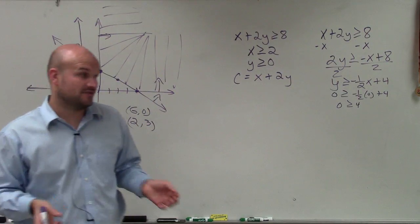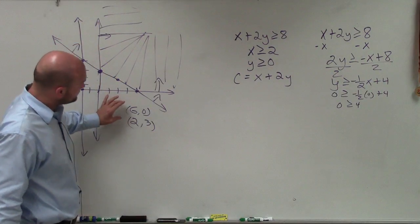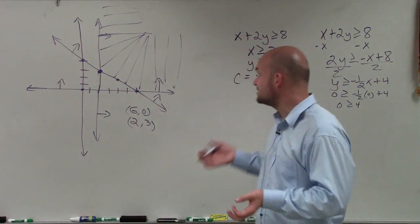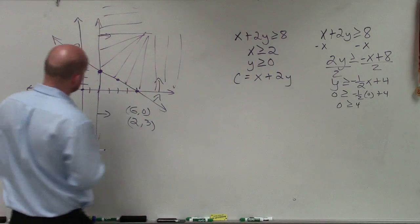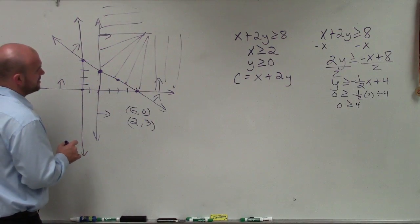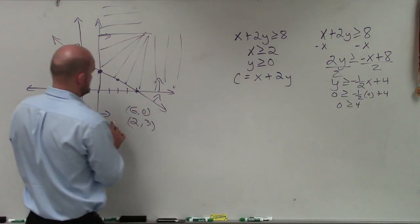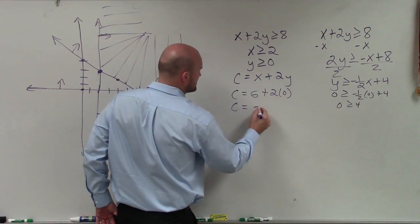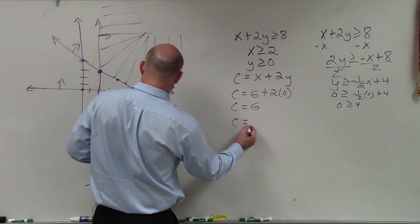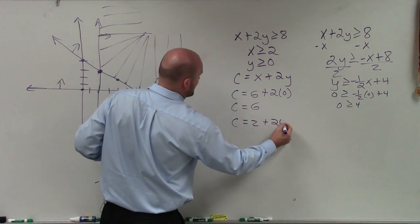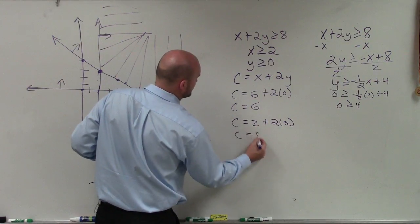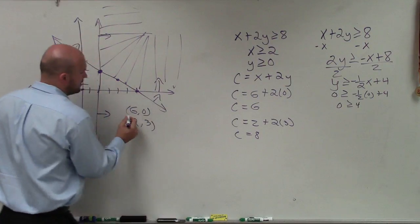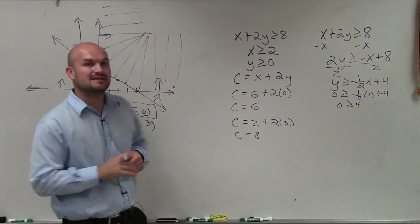Now I'll take these two vertices and plug them into my objective function to determine which provides the minimum cost. For (6, 0): C equals 6 plus 2 times 0, giving C equals 6. For (2, 3): C equals 2 plus 2 times 3, giving C equals 8. Since 6 is less than 8, I'm looking for my minimal point, which is at (6, 0).